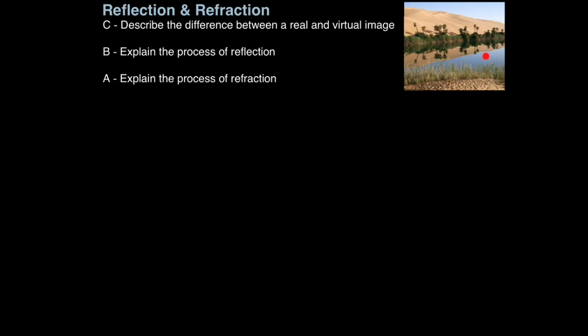So they run over to it, and what happens is the oasis disappears, because what they've actually seen is a mirage, an illusion of water. Where does this illusion come from? Well, believe it or not, what people are actually witnessing is an image of the sky on the ground, so it looks like water.